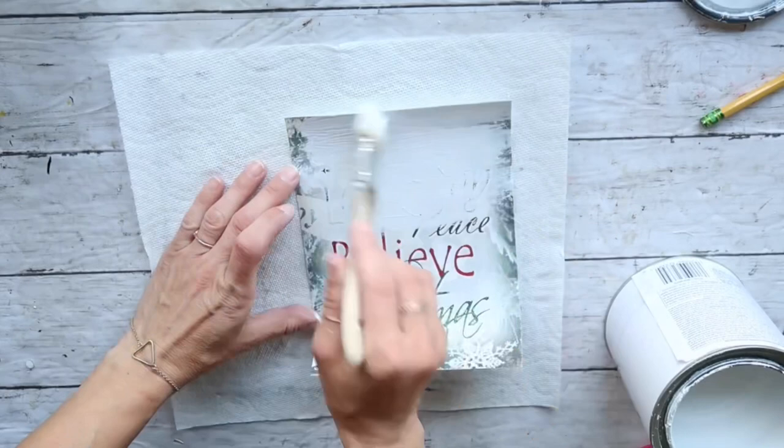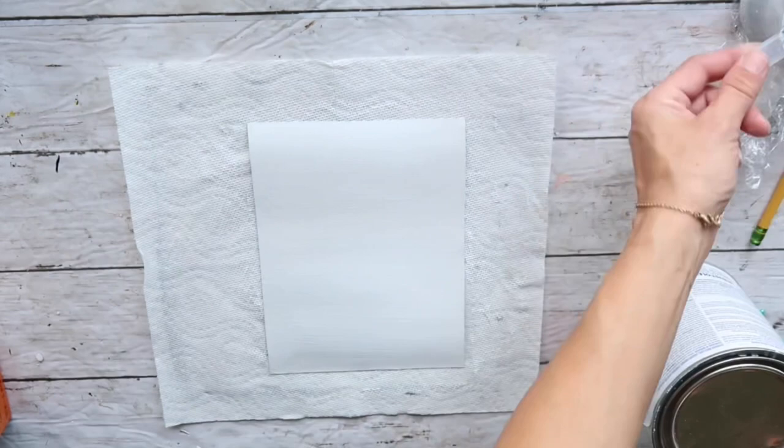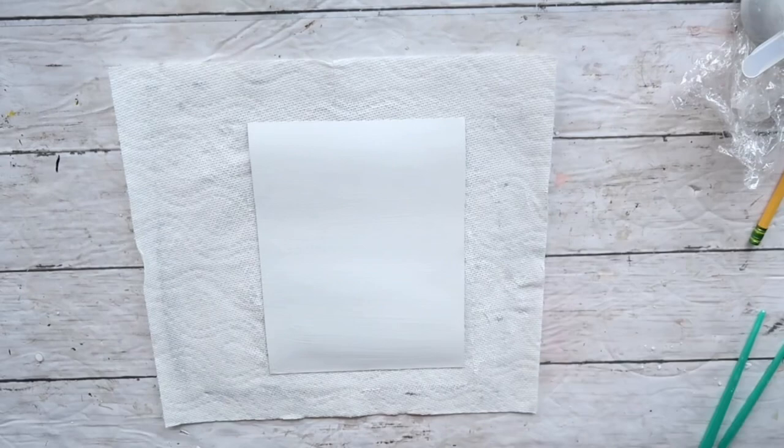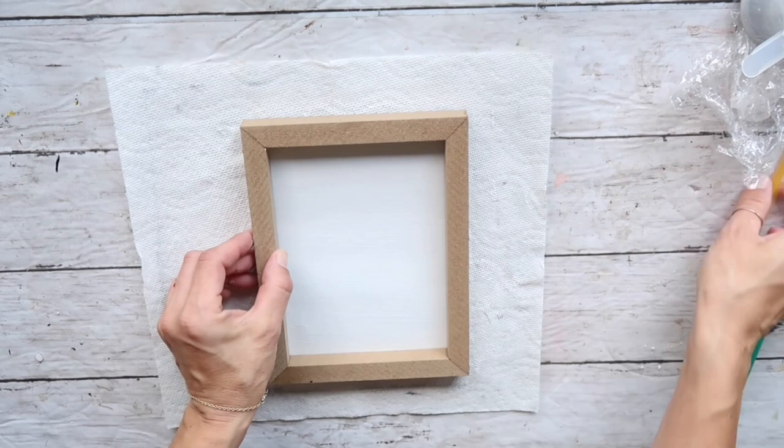I'm going to also give it one coat on the back just to cover that part as well. Now I'm going to take this mixture that I showed you earlier but I added a few more drops of that gray paint just to make it a little bit darker. Now I'm putting the frame on just to make a few dots on each side to know how far I can go with my painting.